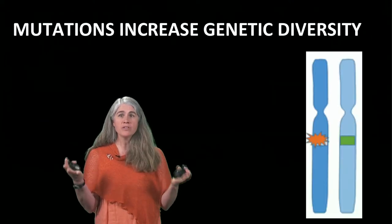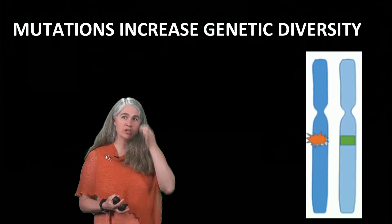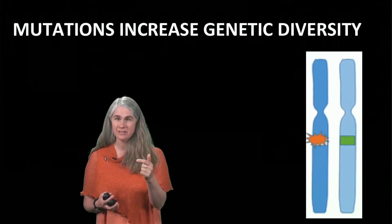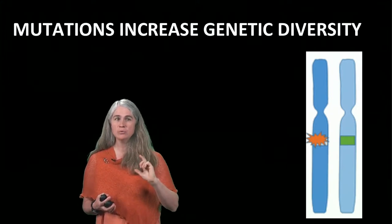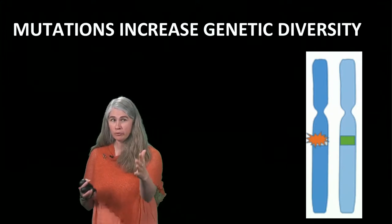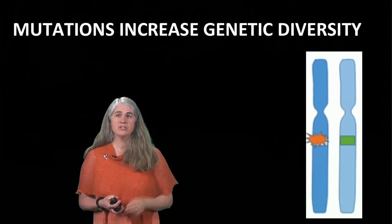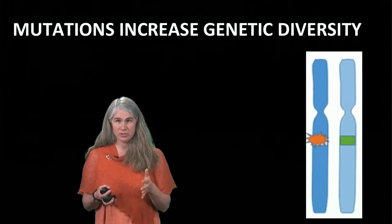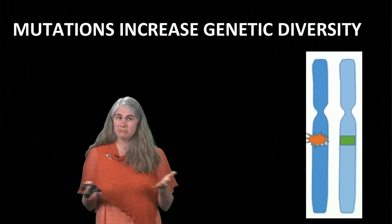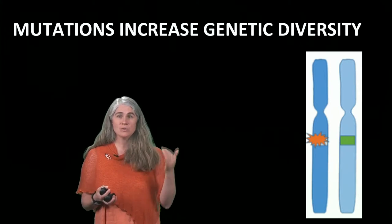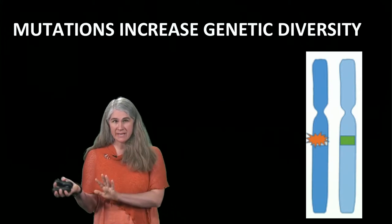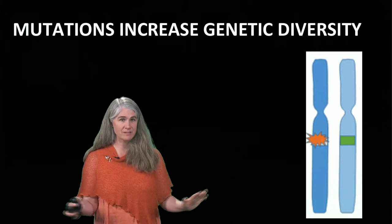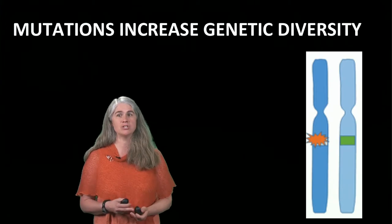Whatever the cause, the changes that happen in cells that can be inherited lead to long-term new variations of a gene. Genetic differences are the basis for evolution and for plant breeding too. Selection, whether it's natural or artificial, can only act on existing variation.